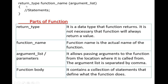This is the syntax of the function. If you are declaring any function, you write the return type, then the name of the function, and in the brackets you specify the number of parameters — this is known as the argument list. Then we will have the statements of the function body.